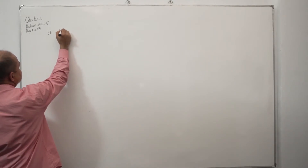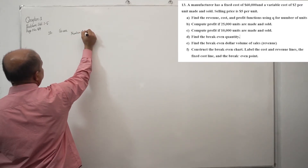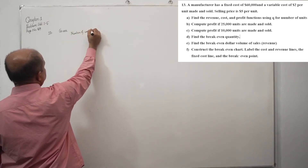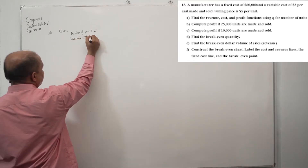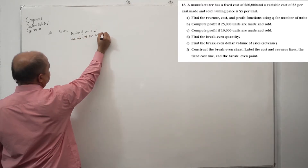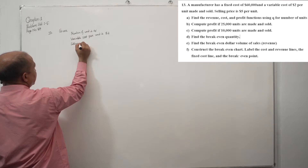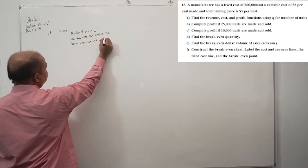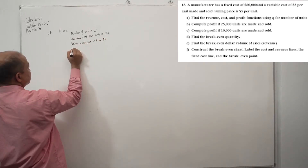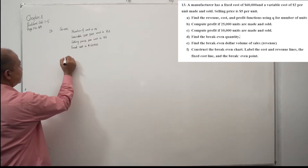What is given? Number of units is Q. Variable cost per unit is $2. Selling price per unit is $5. Fixed cost is $60,000.